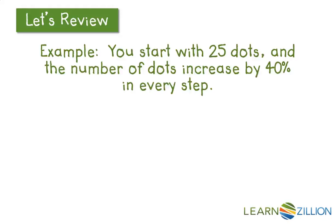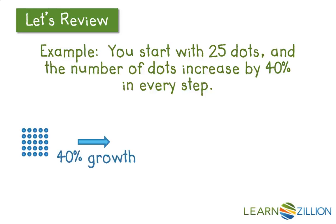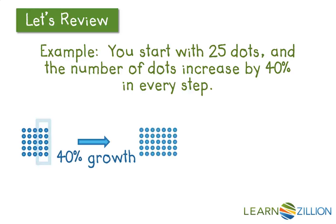I want to show you an example of exponential growth where we're starting with 25 dots and the number of dots increase by 40% in every step. We'll start with this initial group of 25 dots and grow this group by 40%. I'm going to take 40% of that group and add it to the current group. We've added 10, so we should be at 35 dots.